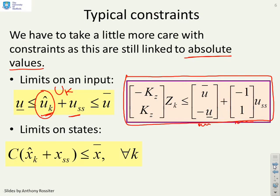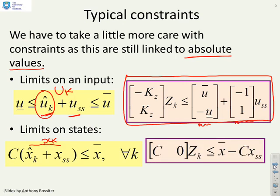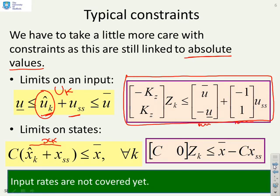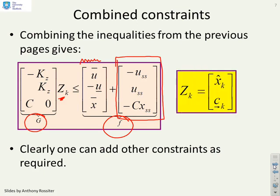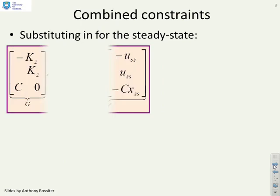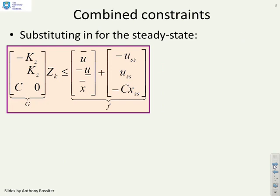In a similar way, if we do limits on the states, I've substituted x_hat_k + x_ss instead of writing x_k, and therefore my state constraints take a form like this. If I combine all those together, then you find that G looks like this, and that's the same as in the previous video, as long as you accept that z has a subtly different definition. But f looks very different. In the previous video we just had this bit, but now we have to add on this bit which depends upon the expected steady state.